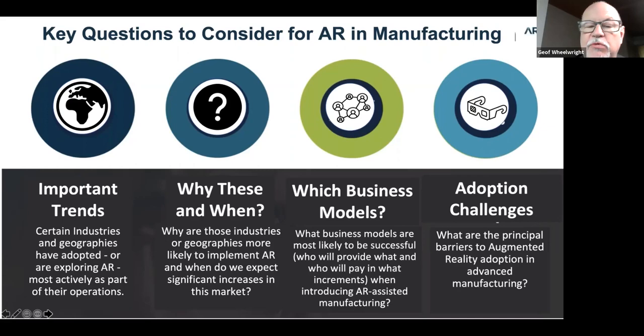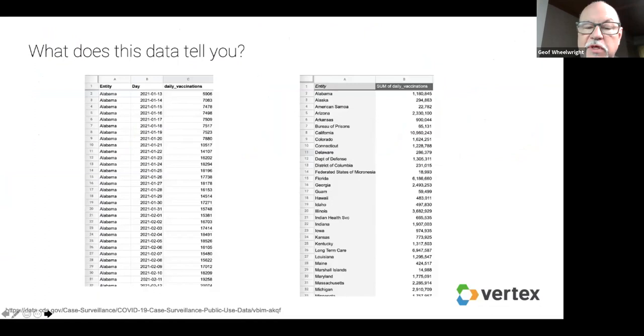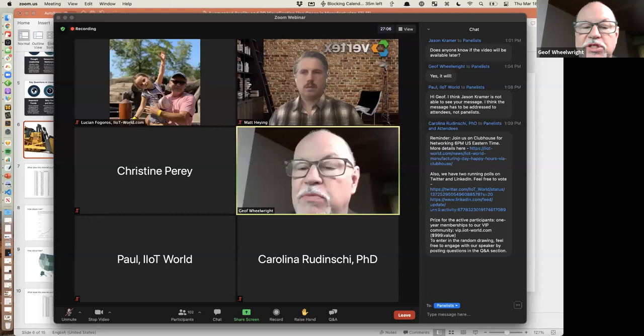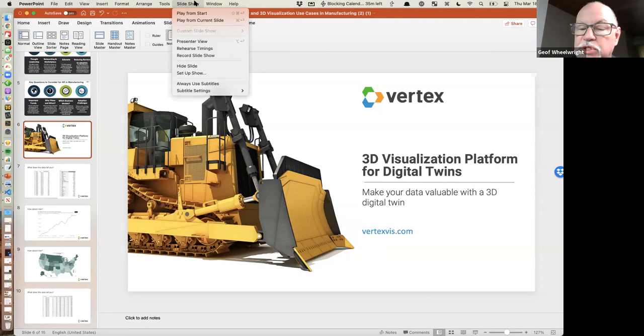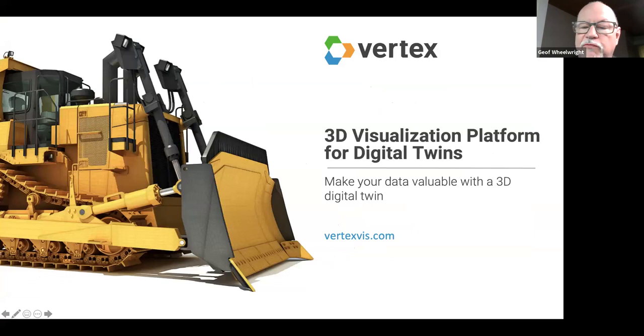Thanks, Christine. We've had a question about the webinar video being available afterwards — yes, it will be. Matt is not only VP of Product at Vertex Software but also oversees new markets and products initiatives, ensuring new product capabilities match customer expectations. Matt received his bachelor's and master's in mechanical engineering from Iowa State, and did his graduate work at the Virtual Reality Application Center, sponsored by the National Science Foundation, Office of Naval Research, and DARPA. We're really looking forward to hearing your insights, Matt — it's all yours.